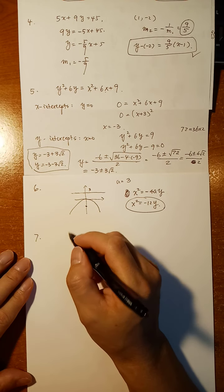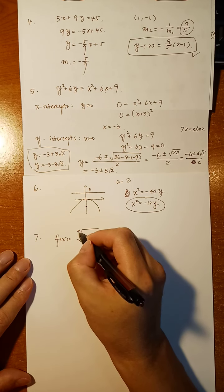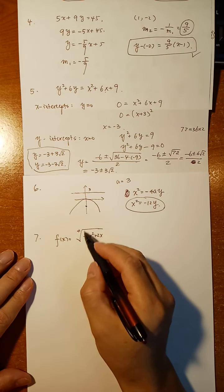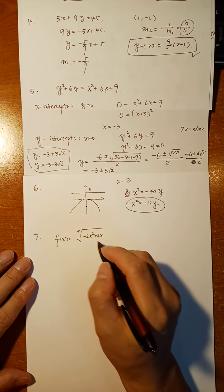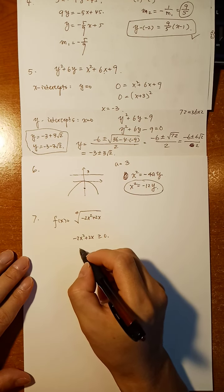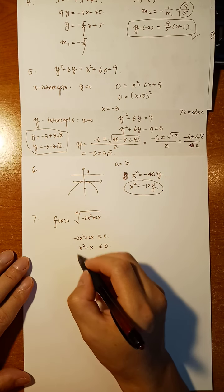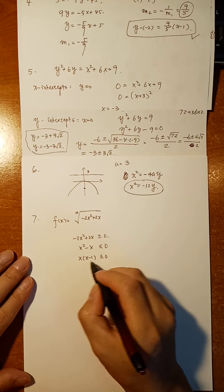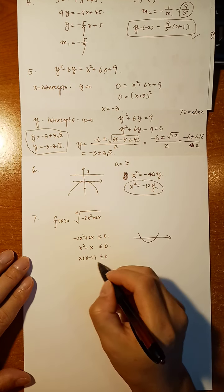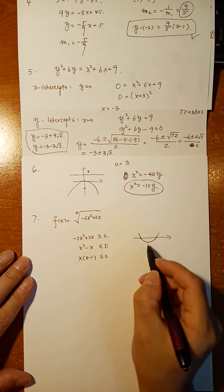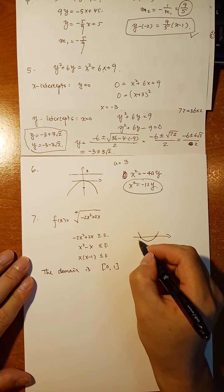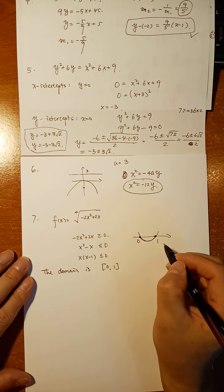Problem 7: determine the domain of f(x) equals the fourth root of negative 2x squared plus 2x. The fourth root is an even root function, which requires a non-negative input, so we need negative 2x squared plus 2x greater than or equal to 0. Dividing both sides by negative 2 flips the inequality: x squared minus x is less than or equal to 0. Factoring gives x(x minus 1) less than or equal to 0. The roots are x equals 0 and x equals 1. Since the parabola opens upward and we need the region below the x-axis, the domain is the closed interval [0, 1].